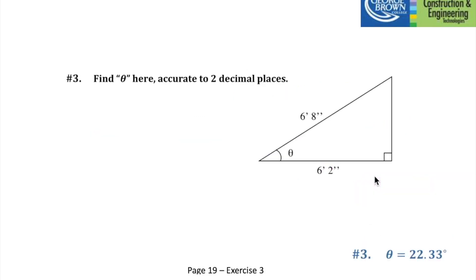Here's another example — pause if you'd like to try it. Relative to angle theta, we have the adjacent and the hypotenuse. That's cosine. So cos θ = 6 feet 2 inches over 6 feet 8 inches. You need to convert these to the same units — I'll convert to inches to avoid repeating decimals.